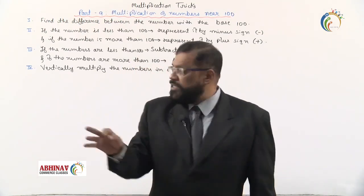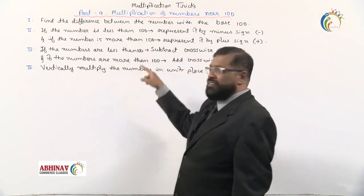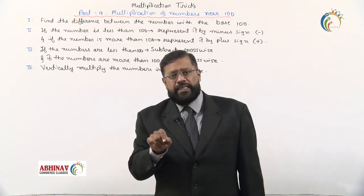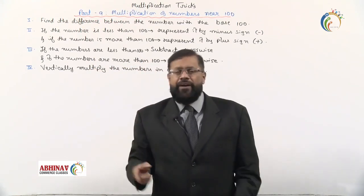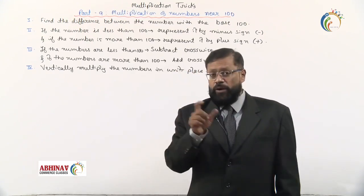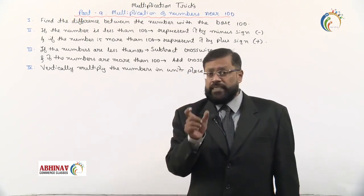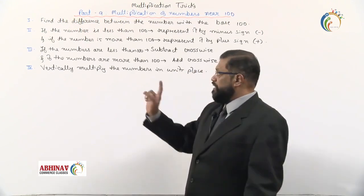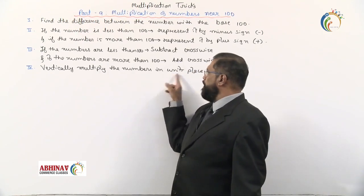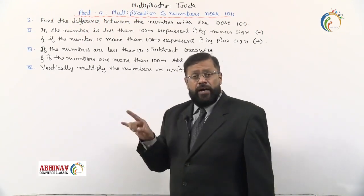If the numbers are less than 100, we crosswise subtract. If the numbers are more than 100, we crosswise add. The number we get after adding or subtracting crosswise must be the same, and then vertically multiply the numbers in the units place.